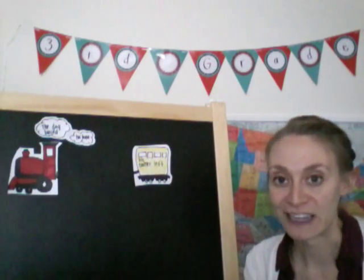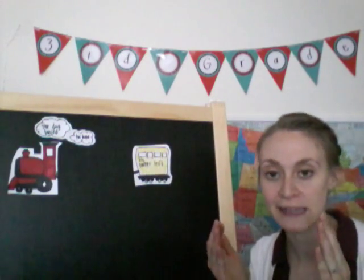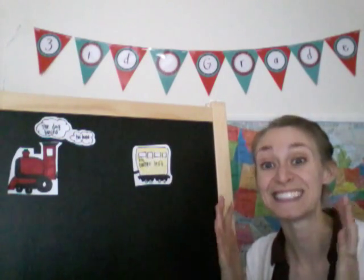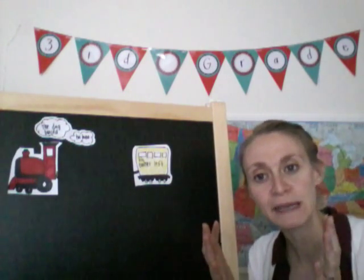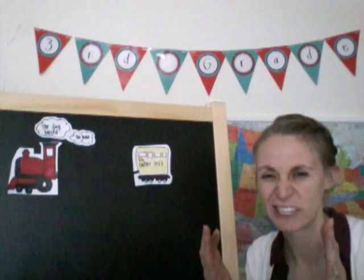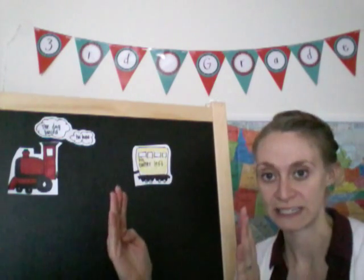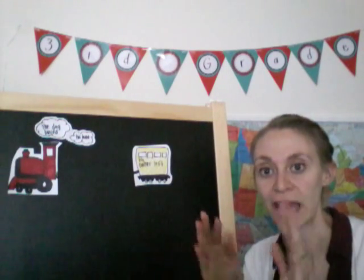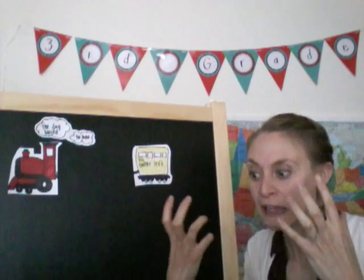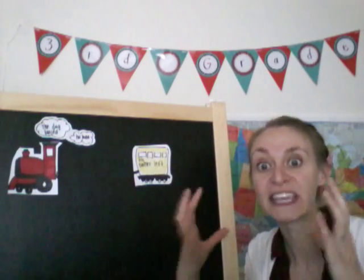Now let's move on to what a dependent clause is. A dependent clause is basically a phrase — it cannot stand on its own as a sentence. For example, 'in the park' — that's a dependent clause. It is part of a sentence, but standing on its own doesn't make a lot of sense. This is where subordinating conjunctions come in. A subordinating conjunction can take a full sentence and a dependent clause and combine them together to make a complex sentence — one that is more meaty and juicy and gives more information.